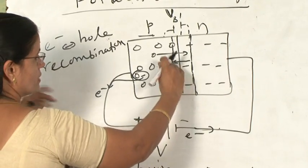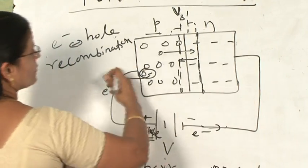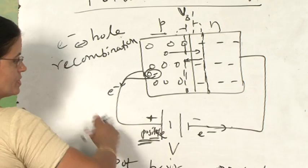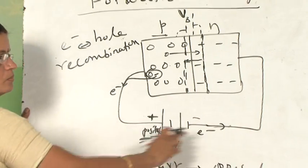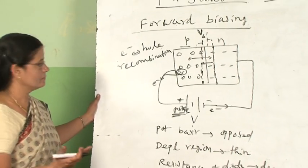So recombination. In this way, the majority charge carriers flow through the P-N junction diode and outside the circuit, the electrons will move. So that is how the P-N junction diode is conducting the current.